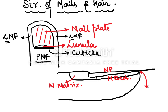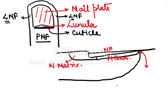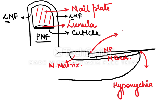The junction of skin and nail plate at the distal end is the hyponychium, while the proximal junction of skin and nail plate is the eponychium or eponychaeum. In the transverse section you can clearly see the nail plate, below it the nail bed, and behind them is the nail matrix.